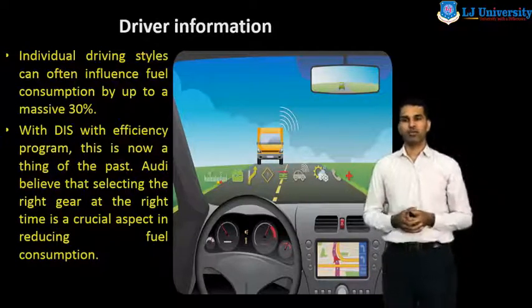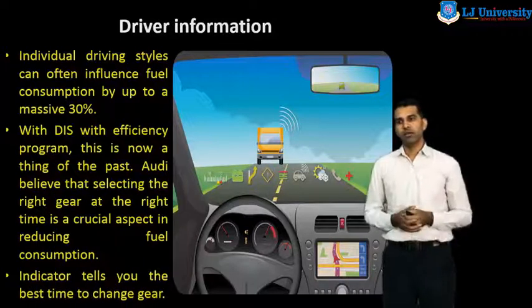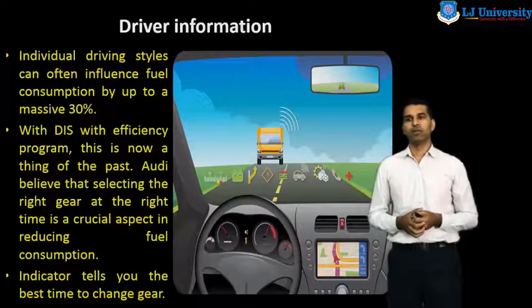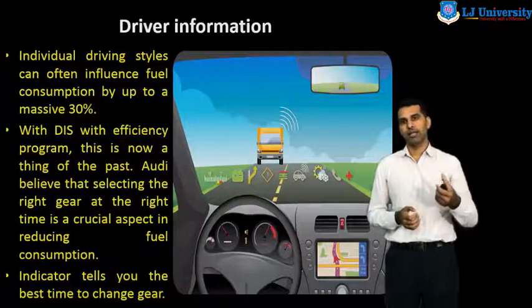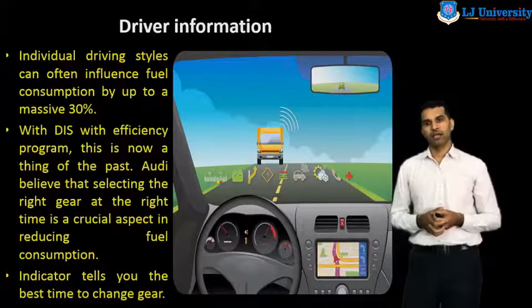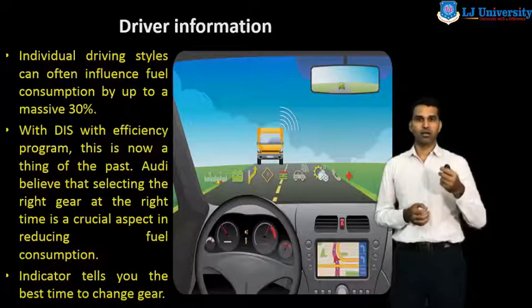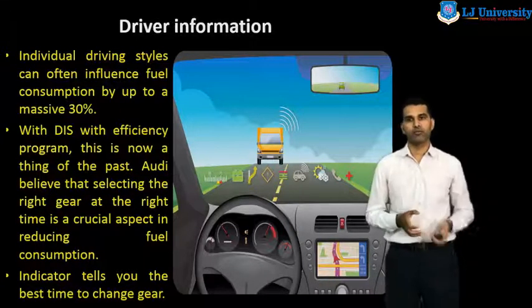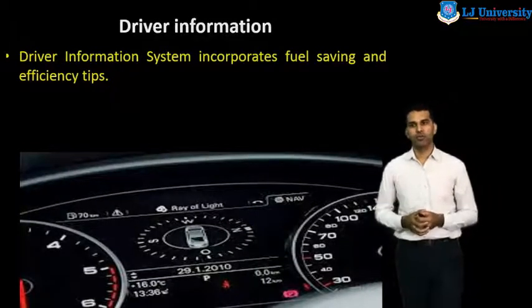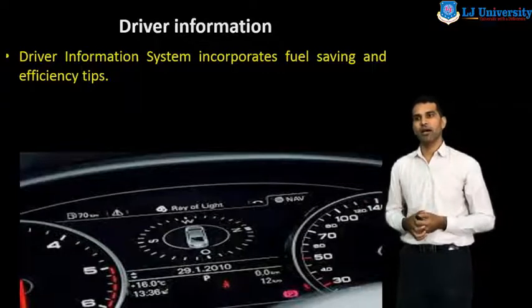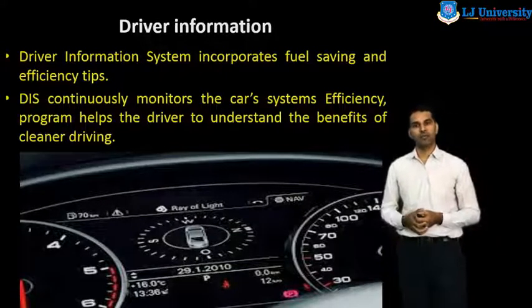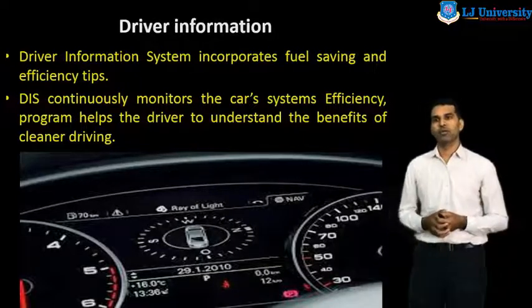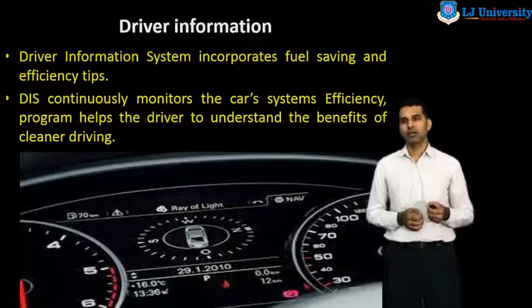The driver information system indicator tells you the best time to change gear. As seen on the driver dashboard, the indicator indicates the appropriate gear according to speed — for example, changing from second to third gear or third to fourth gear. The DIS incorporates fuel-saving and efficiency tips and consistently monitors the car's system efficiency program to help the driver understand the benefits of cleaner driving.